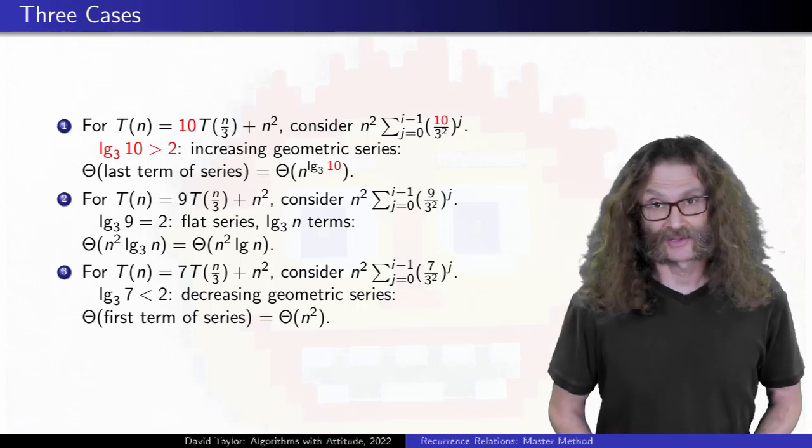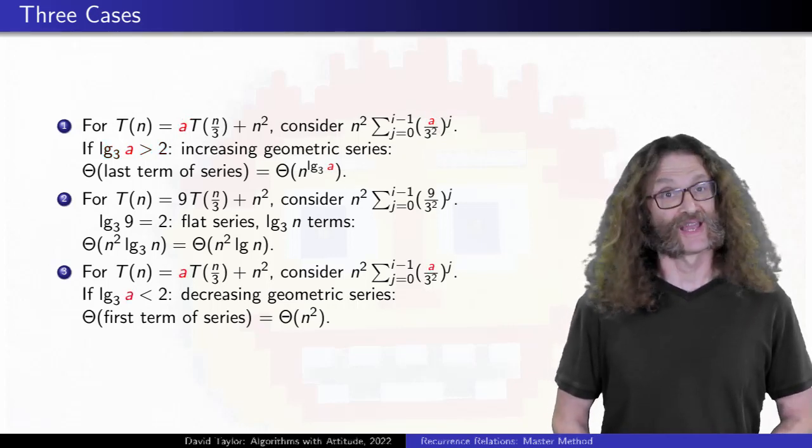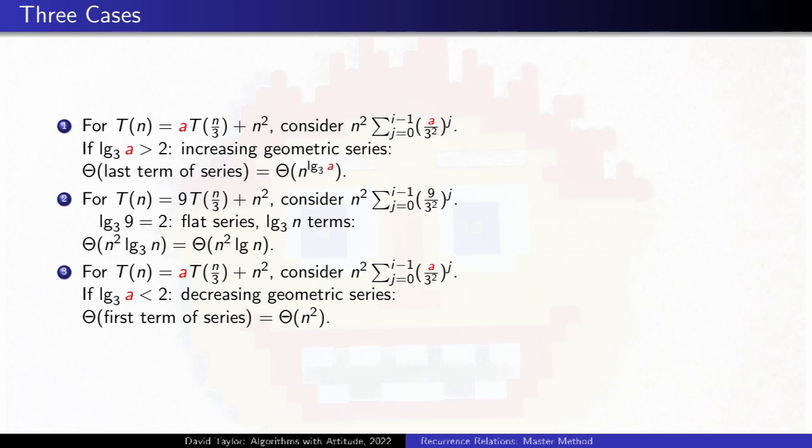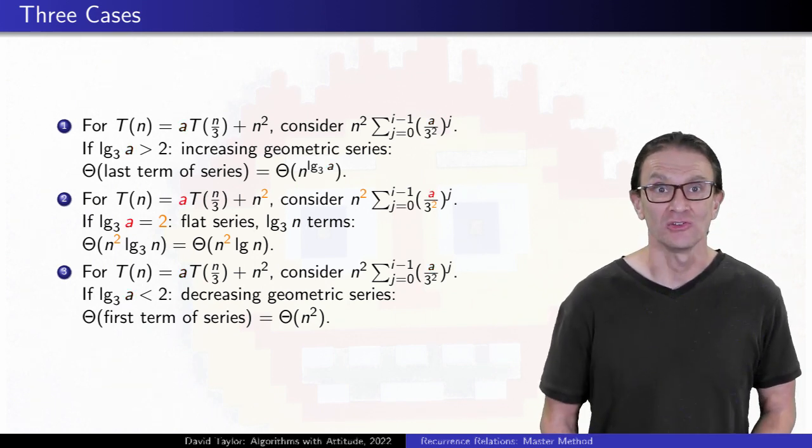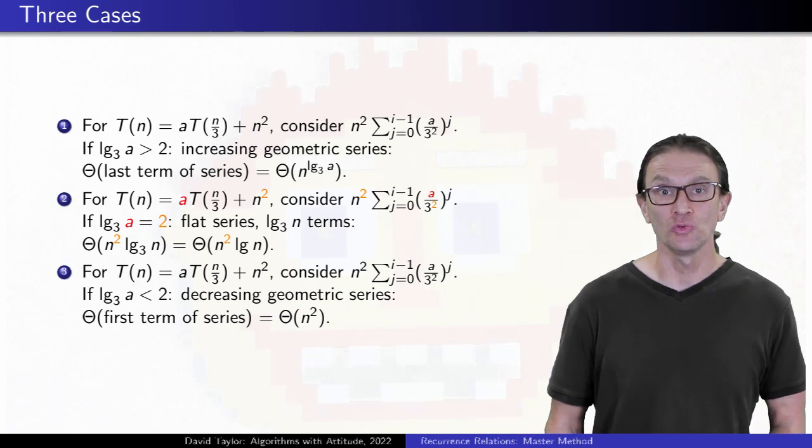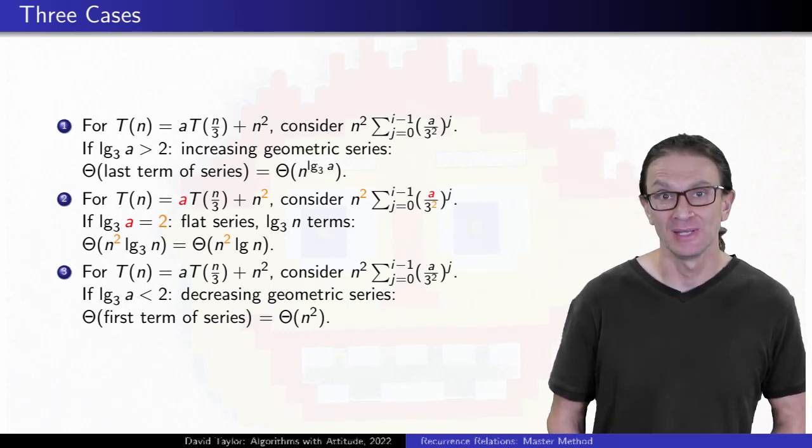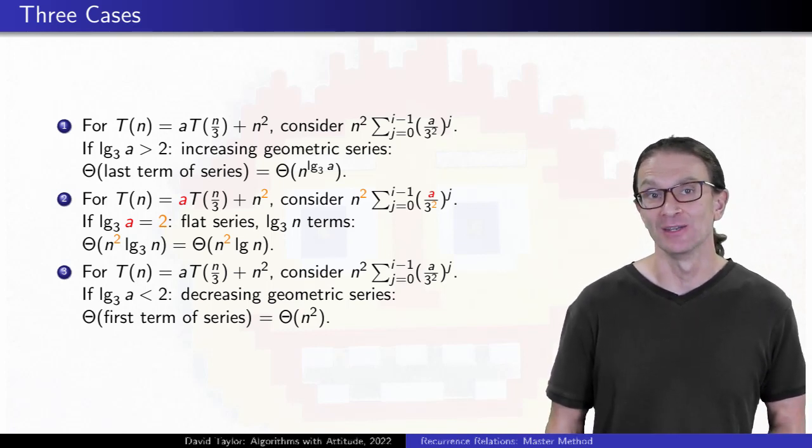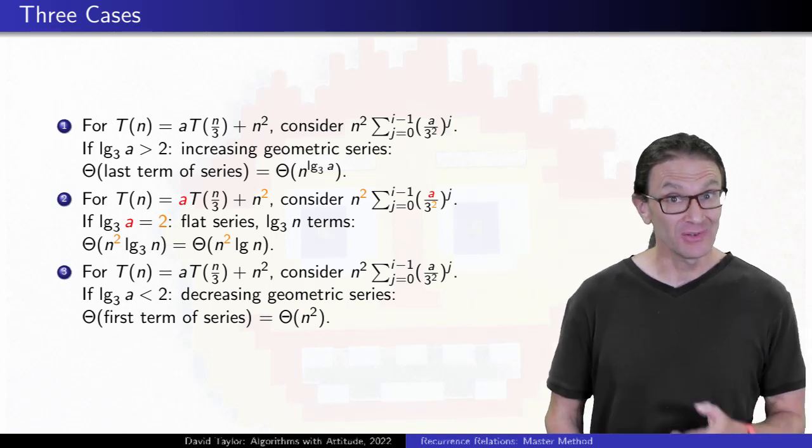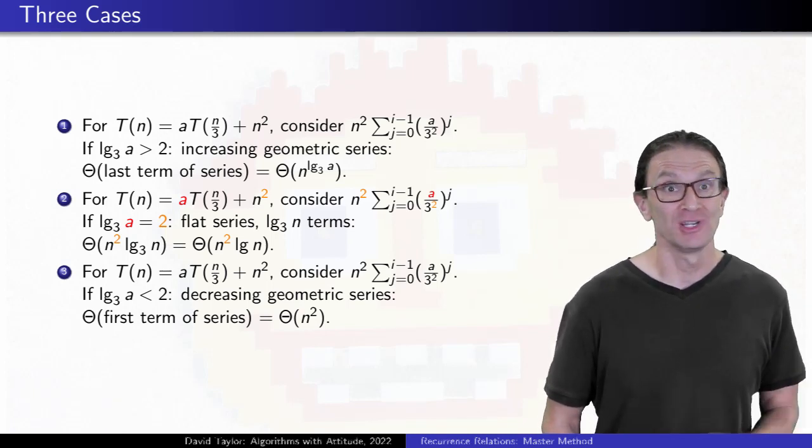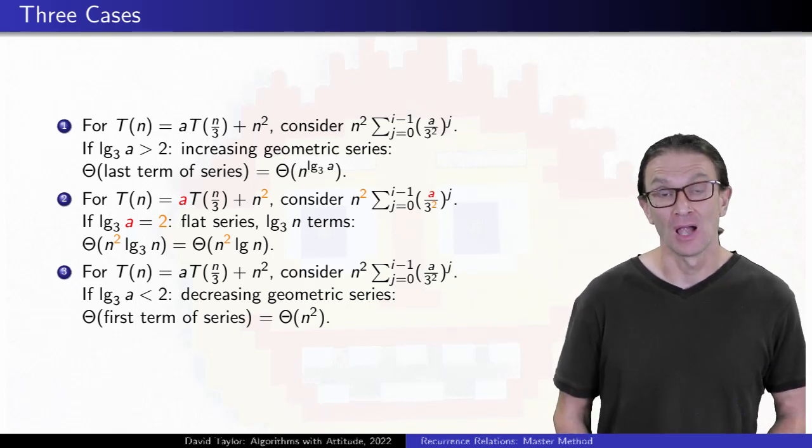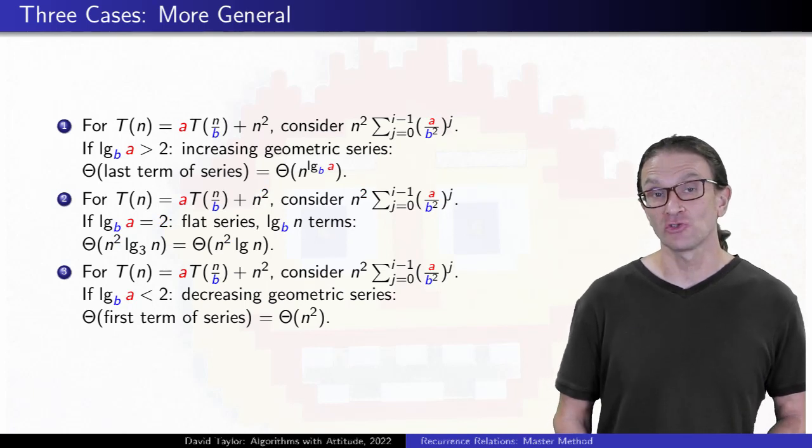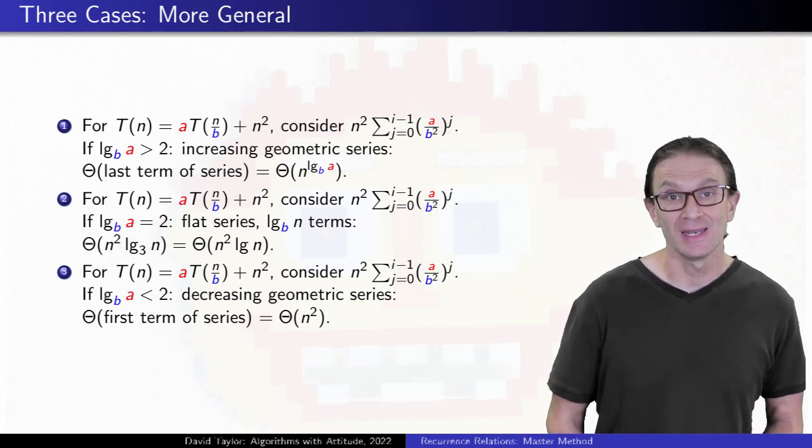So I am going to generalize that coefficient and just call it A. For the second case, the 9 was a bit special, which we can see because only a equals 9 gives that second case, log base 3 of 9 equals 2, matching the exponent term in the n squared term at the end of the recurrence. Except, there isn't really anything special about the 3 divisor or the n squared term, so we can generalize both of them. I will call the divisor B, and that n squared term I will make into n to the c.